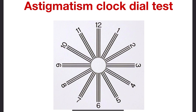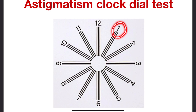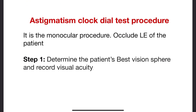Hello everyone, welcome to my channel. In this video we'll be learning about the astigmatism clock dial test. The astigmatism clock dial chart consists of a series of lines of equal length from the center, pointing towards numbers similar to the face of a clock. The angular difference between two numbers is equal to 30 degrees. Before we start with the actual procedure, I want you to know about the optics behind this astigmatic chart.